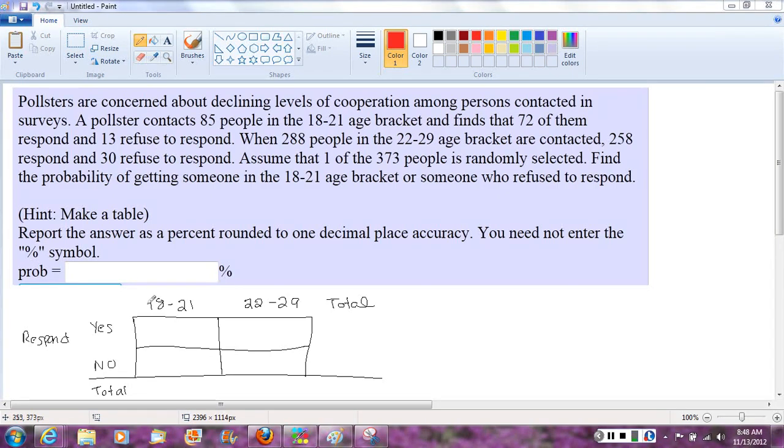So the two age categories surveyed are the two columns of the table, and whether or not they responded are the rows of the column. And I've left space for totals on all of those because many of that information is given to us in the story.